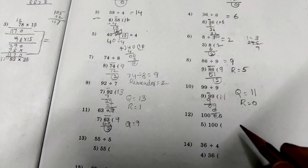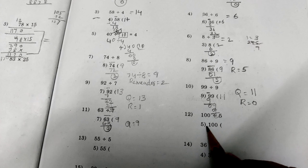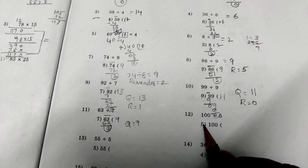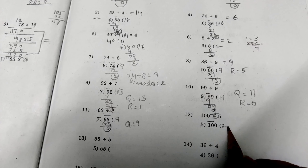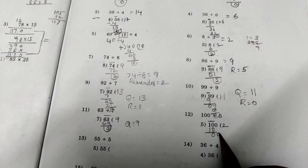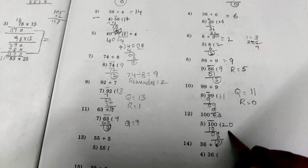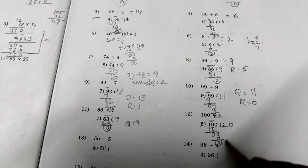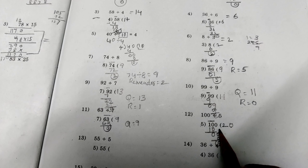Move to next problem: 100 divided by 5. Here when we take 1, it is smaller than 5. So we are taking 10 for doing division. How many times can we subtract 5 from 10? 2 times. So 5 twos are 10. 0 minus 0 is 0. 1 minus 1 is 0. Get down 0. How many times can we subtract 5 from 0? 0 times. So 5 zeros are 0. 0 minus 0 is 0. Finally, answer is 20. 100 divided by 5 is equal to 20. Quotient is 20, remainder is 0.